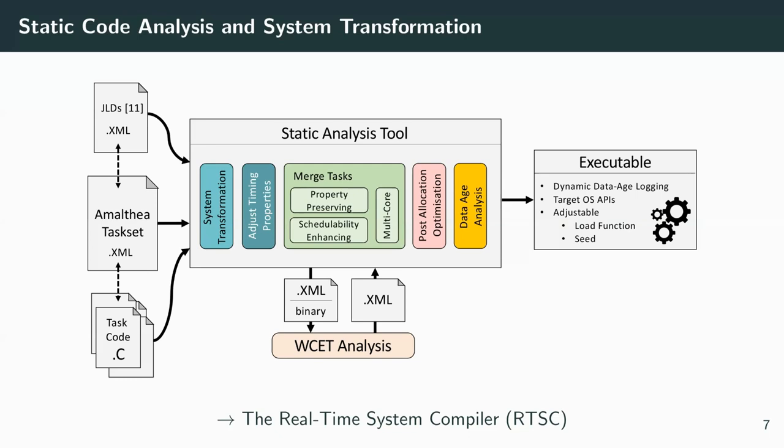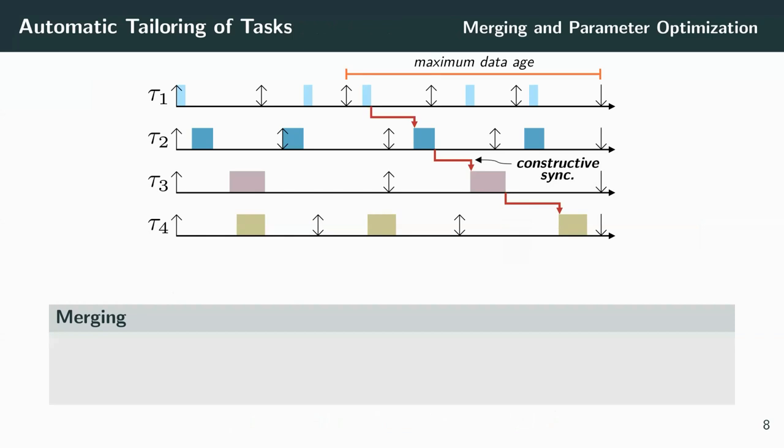To show the transformations we did within the RTSC, I'd like to come back to our example from the beginning. Please note these are not exactly the real transformations—those are more complicated—but I want to give you an impression of what we're doing to achieve our goals. If you look at the example, we have a data chain that is fully sequentialized by constructive synchronizations. This means if we consider these jobs as tasks themselves, it would be easy—it would just be a sequentialized task. Therefore, we do this.